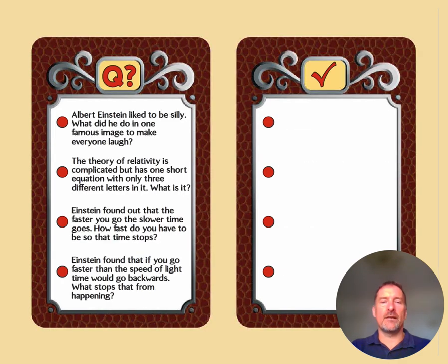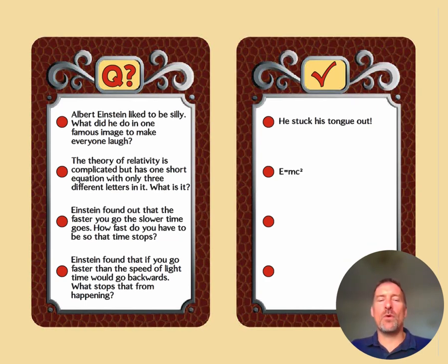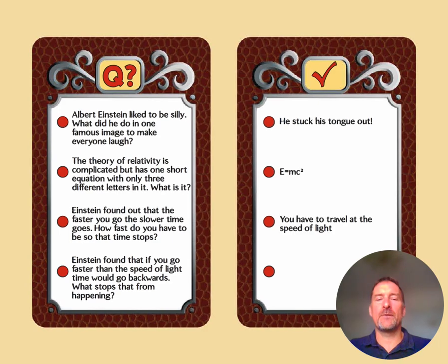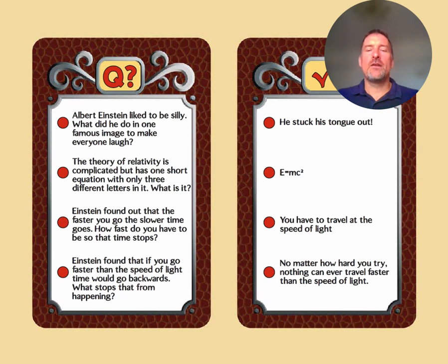Here are some questions about Einstein. Albert Einstein liked to be silly — what did he do in one famous image to make everyone laugh? He stuck his tongue out. His theory of relativity has one short equation with only three different letters — what is it? E equals mc². Einstein found that the faster you go, the slower time goes. How fast do you have to travel for time to actually stop? If you travel at the speed of light, time stops. And what stops time from going backwards? No matter how hard you try, nothing can ever travel faster than the speed of light.